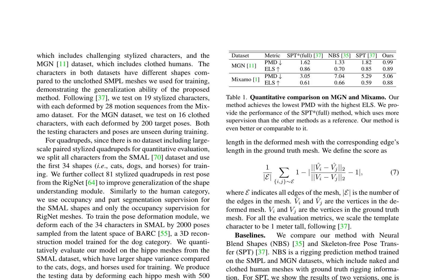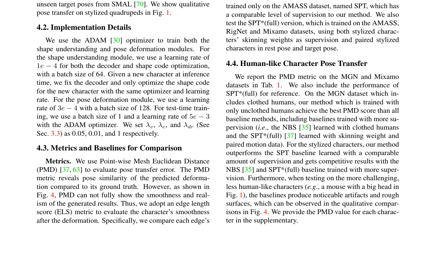The paper also proposes volume-based test-time training to address surface distortion and long-tail pose distribution issues, involving fine-tuning the pose deformation module on unseen stylized characters and applying a volume-preserving constraint. The method is evaluated on various datasets, including MGN and McSamo, showing improved pose transfer error and character smoothness compared to baseline methods.